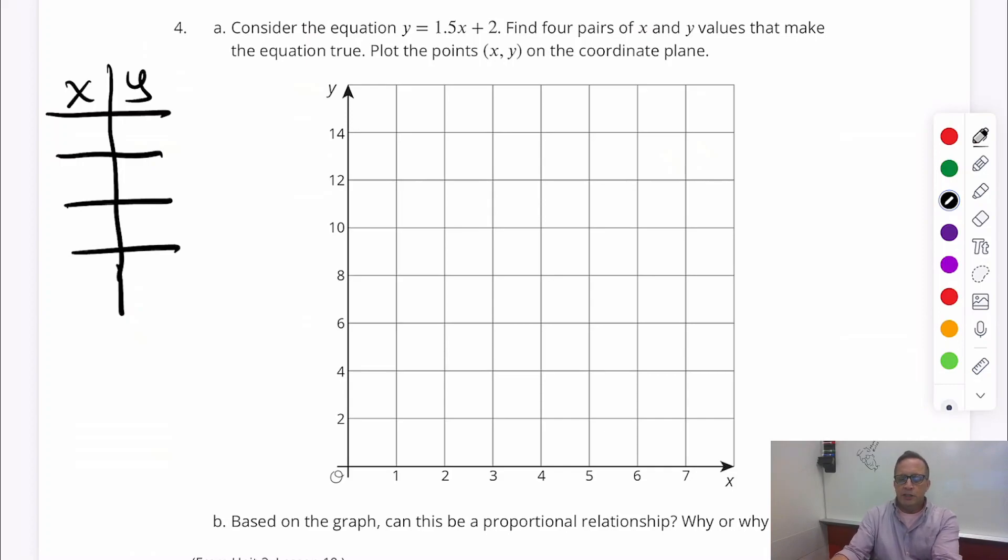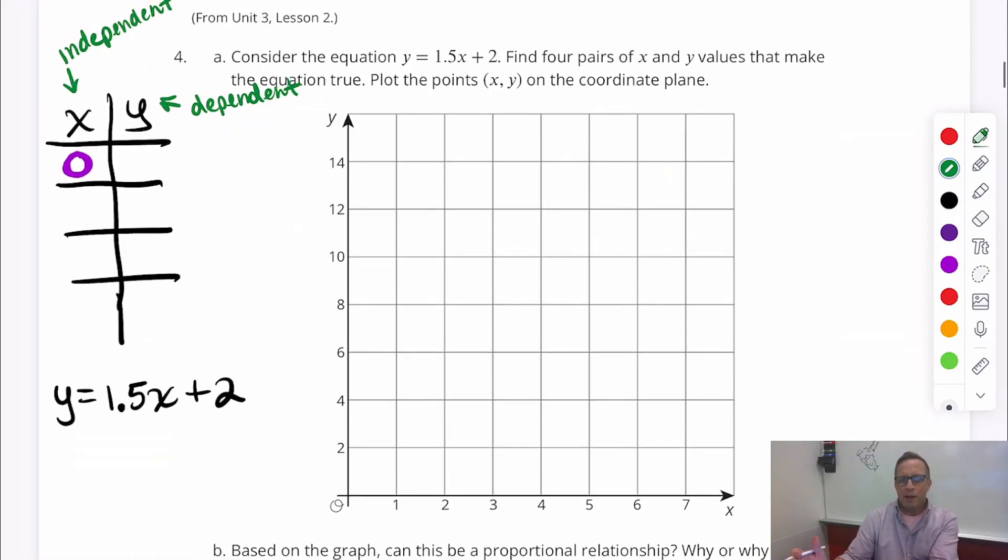So, I'm going to make an input-output table. X and Y. And, it says we need four pairs. Okay. So, I'm going to give myself four spots for four pairs. Alright. Now, the equation, I know it looks complicated. Y equals 1.5X plus 2. It's going to help us figure out what we can put in. Alright. So, what I'm going to do, I'm going to put some numbers in here. I'm going to say, what if X is zero? What if? Alright. Now, this is not always totally obvious to everybody. But, these are independent values. And, these are dependent, typically. Those are dependent values.